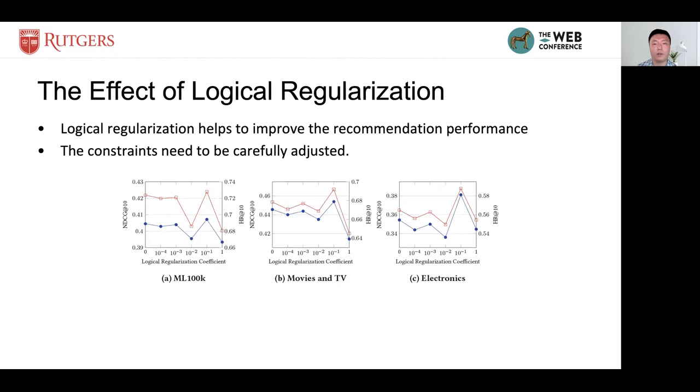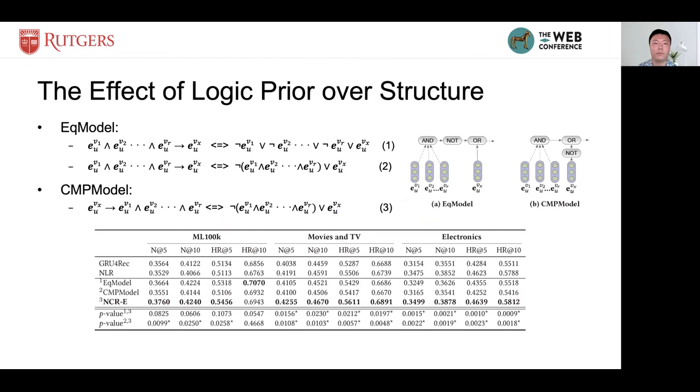To verify the effectiveness of the logical regularization, we run experiments on three datasets by changing the coefficient of logical regularizers. We can see that it is useful to apply logical constraints to the neural networks to improve the recommendation performance. However, the constraints need to be carefully adjusted. If a constraint is too weak or too strong, the performance of the model would be negatively influenced.